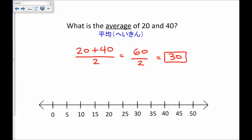Now, that is useful because 20 is here, 40 is here, and 30 is exactly in the middle. So, the average is helpful when we are finding the midpoint.